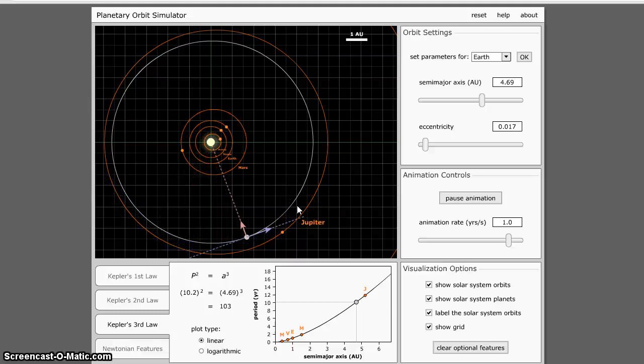This is Kepler's Third Law. These two things, the length of time it takes for the planet to go around its period, and the semi-major axis, how far away it is from the Sun, are related. The length of time the period squared is always going to be equal to the semi-major axis cubed.